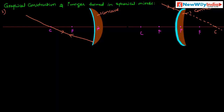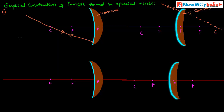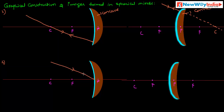What is Rule 4? If a ray of light is incident at the pole of a concave mirror, after striking the mirror it reflects obliquely, where the angle of incidence equals the angle of reflection. Similarly, for a convex mirror, if a ray of light is incident at the pole, after reflection it will pass obliquely, with the incident angle equal to the reflected angle.